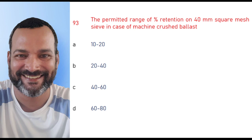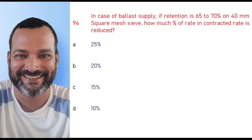The permitted range of percentage retention on 40 mm square mesh in case of machine-crushed ballast is 40 to 60%. In case of ballast supply, if retention is 65 to 70% on 40 mm square mesh, the percentage by which the contractor rate is reduced is 10%.